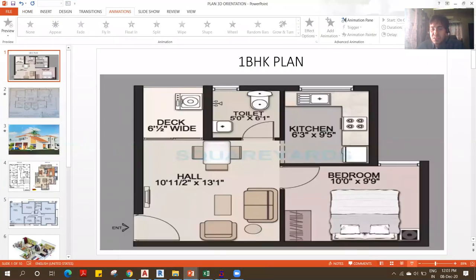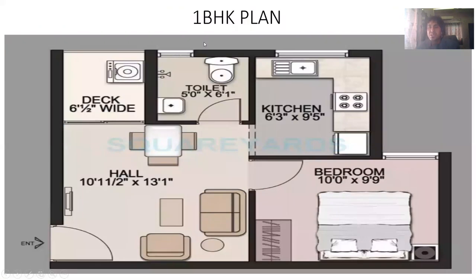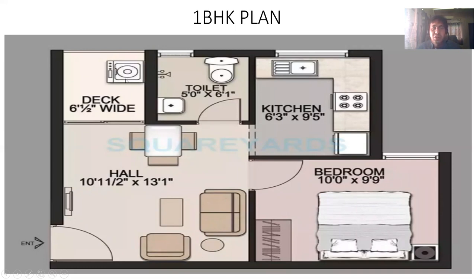For a one BHK plan, I'll give you a bedroom of 10 feet by 9 feet 9 inches. There is a door from which you enter a hall of 10 feet by 13 feet. I have a toilet of 5 feet by 6 feet, a kitchen of 6 feet by 9 and a half feet, and a deck — a utility area where you can keep your washing machine and do those activities. The entrance is here — this is how a one BHK plan looks.